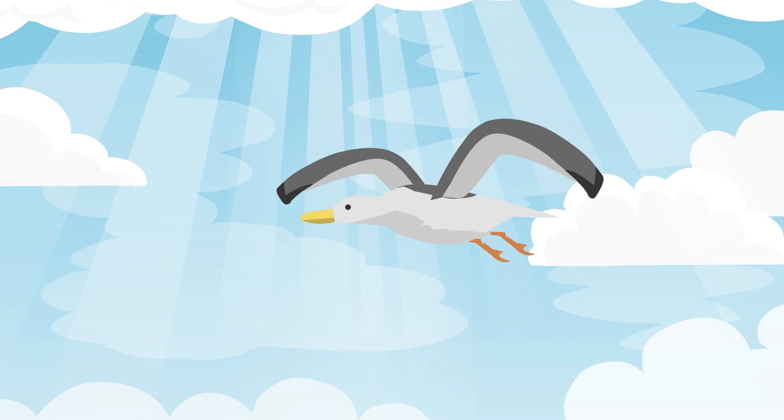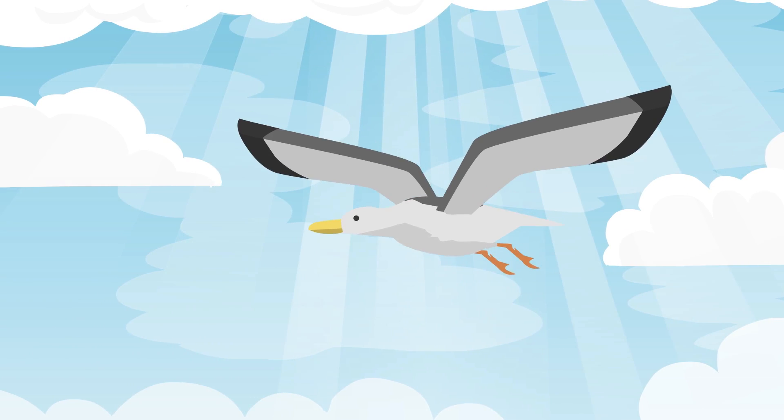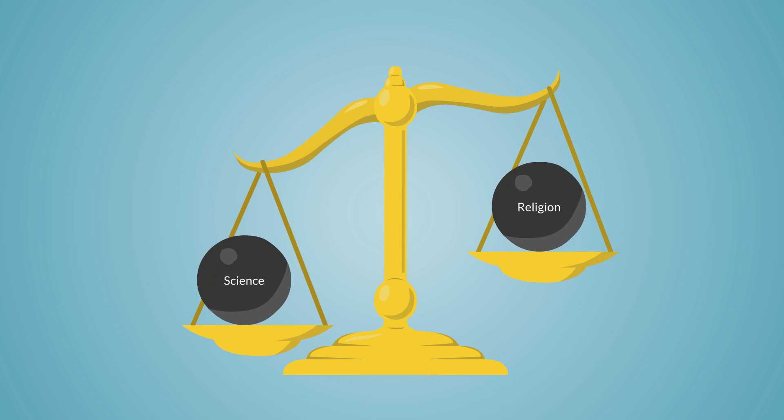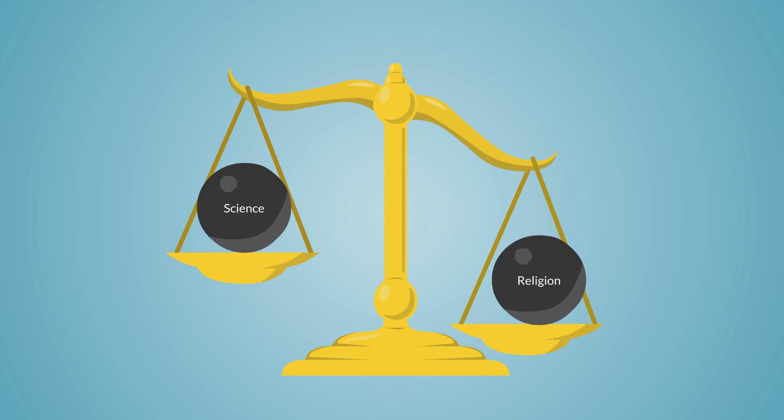Science and religion are like the wings of a bird. The bird needs both wings to fly. If we engage in too much science, it can lead to materialism. If we have too much religion, it can lead to superstition, intolerance and fanaticism.